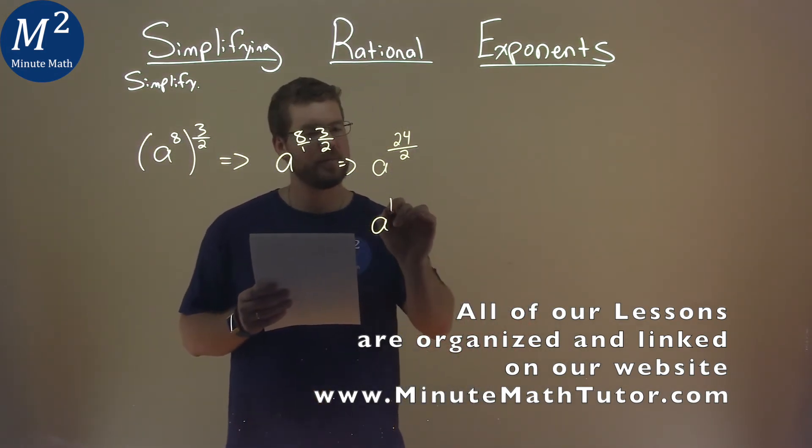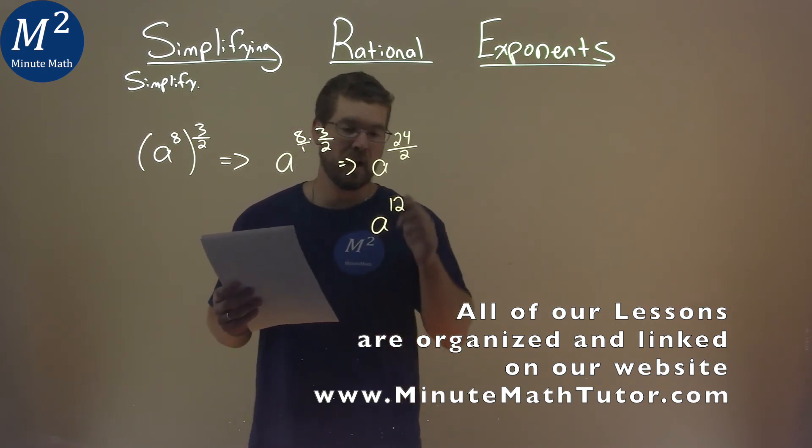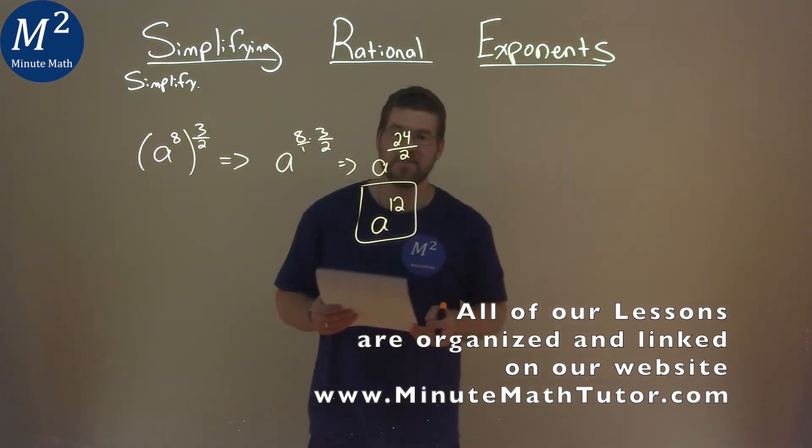Twenty-four divided by two is a twelfth, and that's it. Our final answer here is just A to the twelfth power.